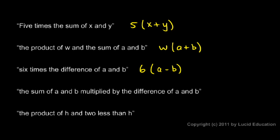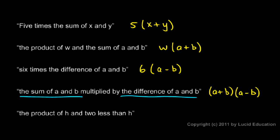The sum of a and b multiplied by the difference of a and b. We have this thing — the sum of a and b — and this thing — the difference of a and b — and those two things are multiplied together. So that will look like this: (a plus b) times (a minus b). That's the sum of a and b times the difference of a and b, those two multiplied together.